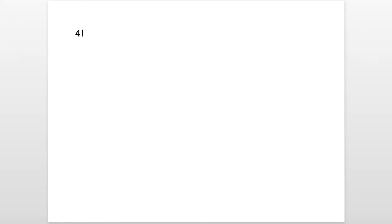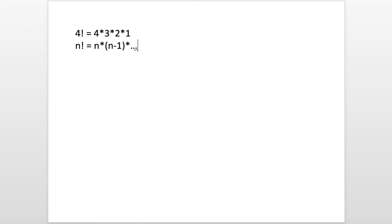Let's start with the concept of factorial. For example, the factorial of 4 is basically 4 times 3 times 2 times 1. The factorial of any number is basically the number itself multiplied by all the integers less than that number, all the way down to 1 — so n times n minus 1, all the way down to 1.